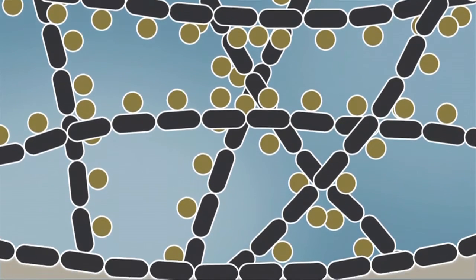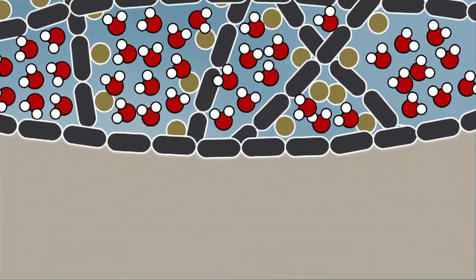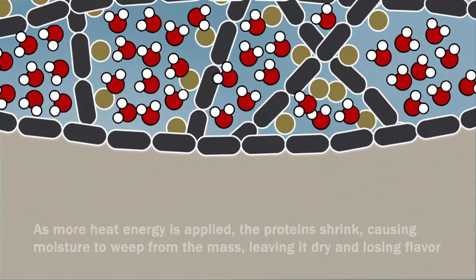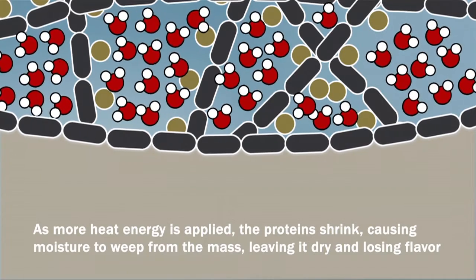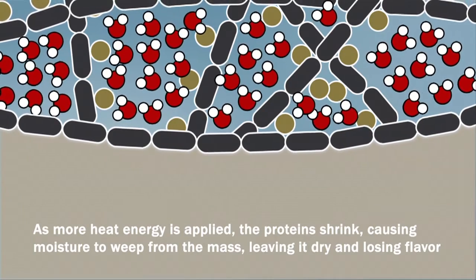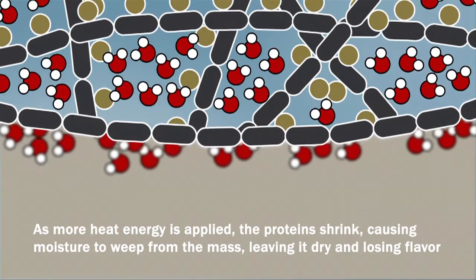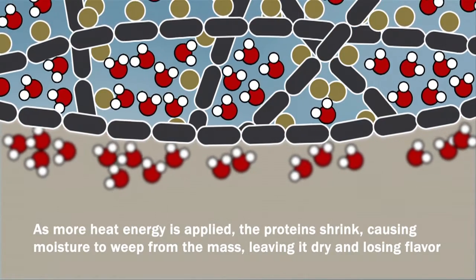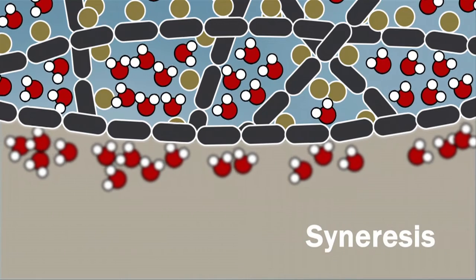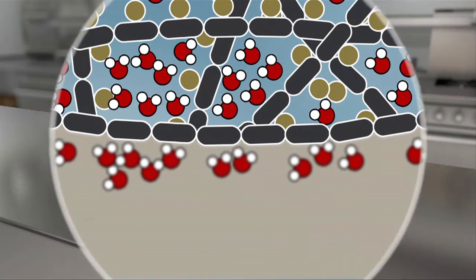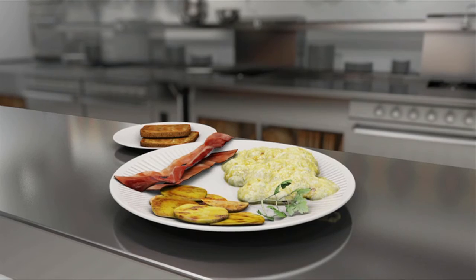Coagulated proteins form a meshwork that traps water in the spaces between the proteins and coats the proteins themselves. As more and more protein-protein hydrogen bonds are formed, the water that was coating the proteins is displaced and weeps out of the gel in a process called syneresis. Syneresis is why scrambled eggs weep fluid and why meat loses moisture when cooked.